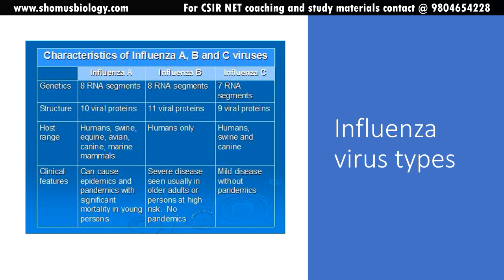Let's look at a comparison between influenza A, B, and C. For the genetic component: influenza A has eight RNA segments, influenza B also has eight RNA segments, but influenza C has seven RNA segments. Something unique about the influenza virus is that its genetic material is not a single RNA but multiple segmented RNAs — influenza A and B both have eight segments while C has seven.